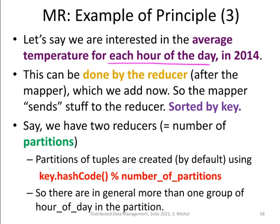Let's say we have two reducer tasks running on different machines. This means we create two partitions. Tuples are partitioned based on the key into one partition or the other. The default partitioning in Java is: take the key (the hour of the day), compute a hash code, then take the modulo with respect to the number of partitions (here two), and assign tuples to one partition or the other — this is what gets sent to the two reducer machines.